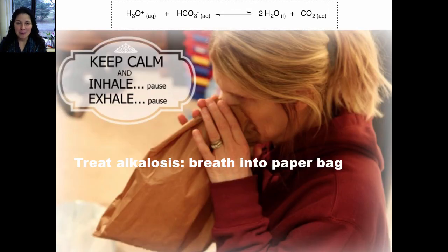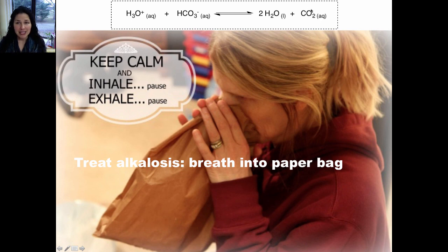Alkalosis is a condition caused by hyperventilation. One way to treat alkalosis is by breathing into a paper bag. The reason you breathe into a paper bag is that when you inhale again, you're inhaling the carbon dioxide that you just exhaled, and that stops the loss of carbon dioxide. When you're hyperventilating, you're exhaling too much carbon dioxide. So if you inhale that carbon dioxide again, it prevents the shift of this equilibrium too far to the right. By increasing the amount of carbon dioxide you inhale, you shift this back to the left-hand side and you prevent alkalosis by preventing the loss of acid from your blood.